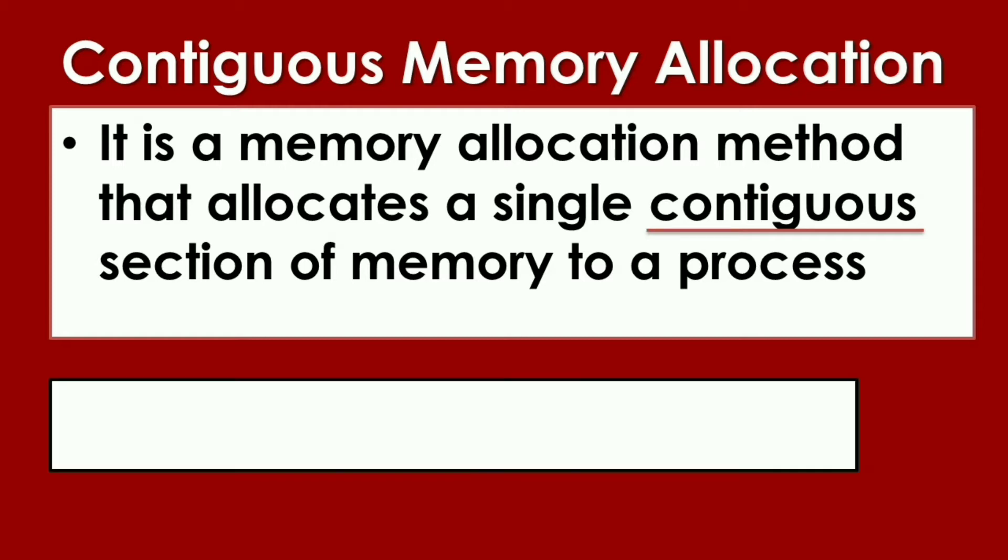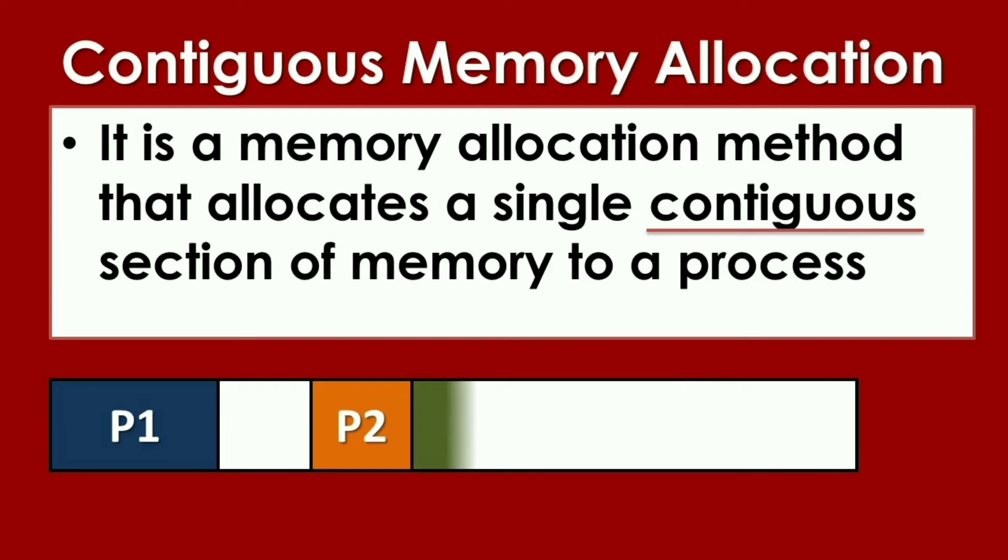To better understand that, let's say this is the memory. Then we have Process 1, it will occupy part of the memory. Then we have Process 2, another part of the memory. If you look at it, it is attached to the main memory, meaning it's part of the main memory that it's using. Then another part of the main memory.